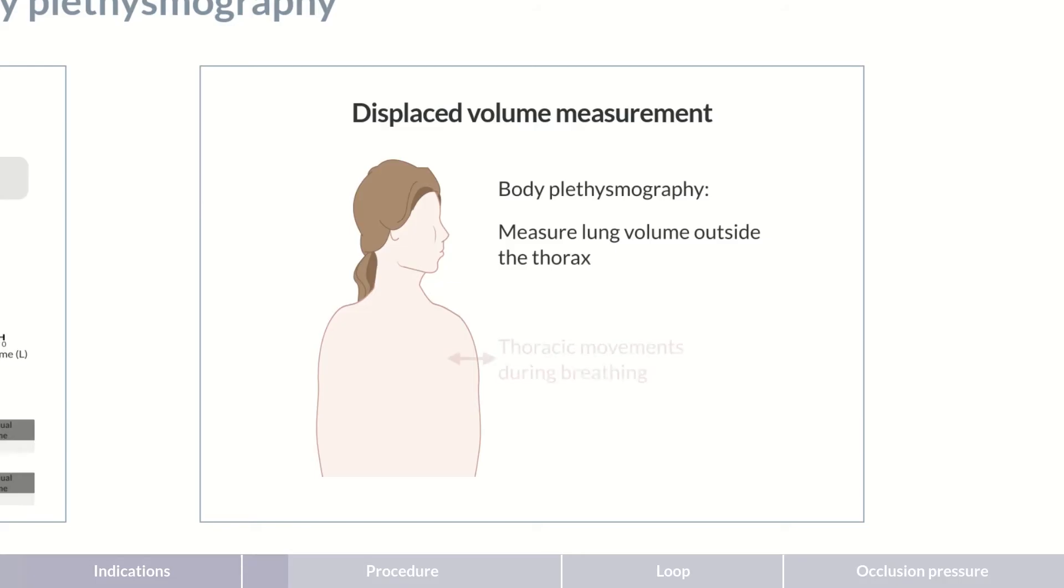For this, thoracic movements during breathing are recorded as pressure changes in the surrounding air, which are converted subsequently into changes in the lung volume.